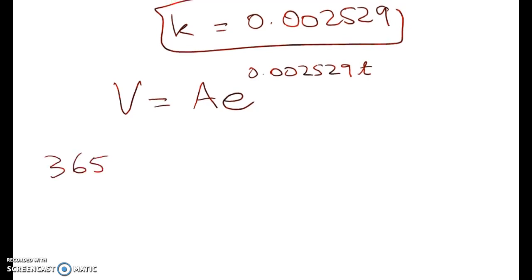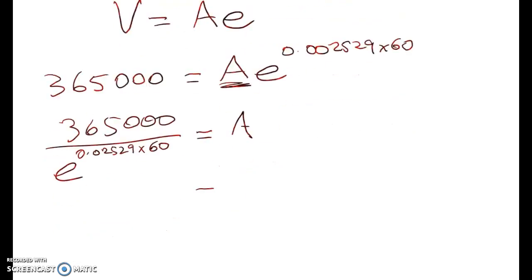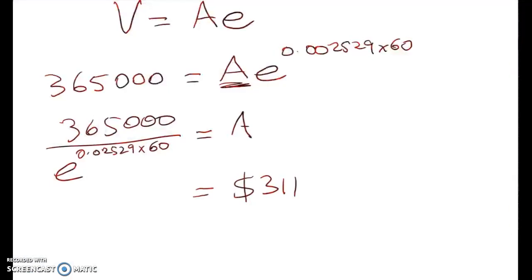365,000 is equal to A e times this. And we're looking for this initial value here of A. Right so 365,000 divided by e to the power of this will give me A and A works out to be, let's just check the schedule, $313,611. Okay so there we go.